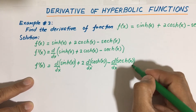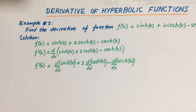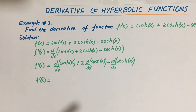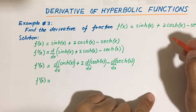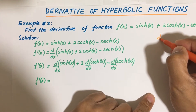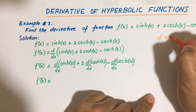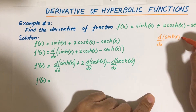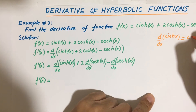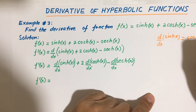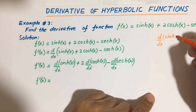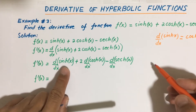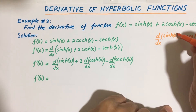Now we apply the formulas for the derivatives of hyperbolic functions. From the formula, the derivative of hyperbolic sine of x with respect to x is equal to hyperbolic cosine of x. You may put x inside the parentheses or you may not — that's okay. Since our terms are inside parentheses, we will keep that notation.